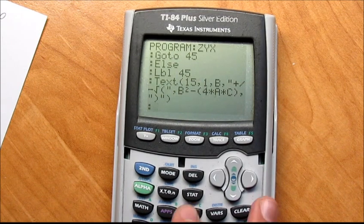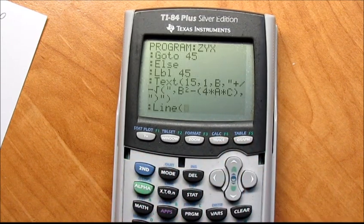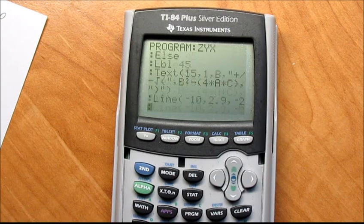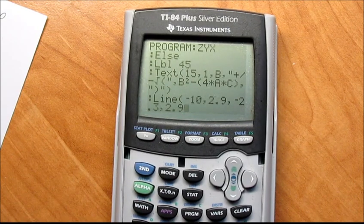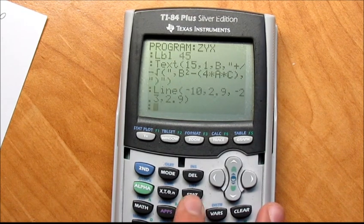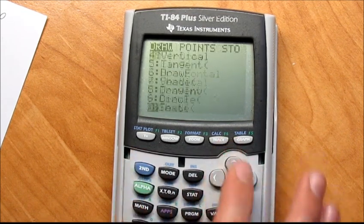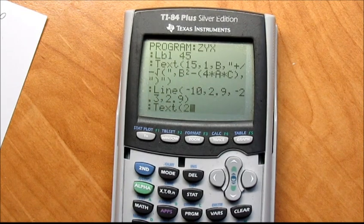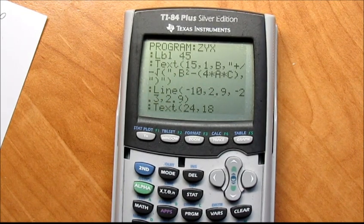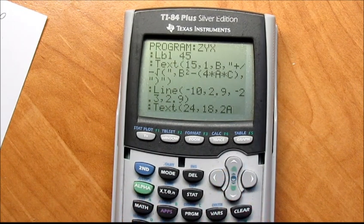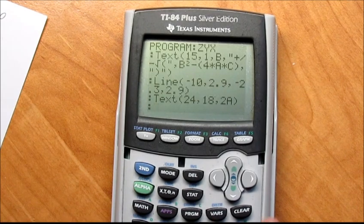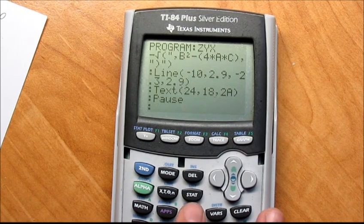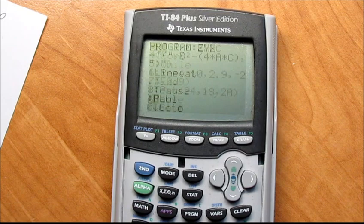And then you're going to go second program, line, and it's going to go negative 10, comma 2.9, comma negative 2.3, comma 2.9, and then put that parenthesis in there just to close it off. And then program, second program text, and this is going to be at 24, comma 18, comma, and then you're just going to put 2A, close it off, hit enter. And program pause.